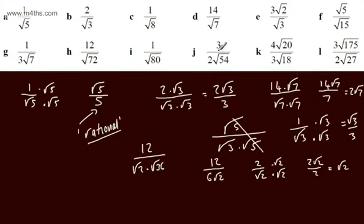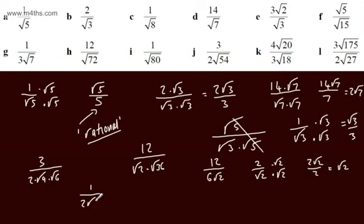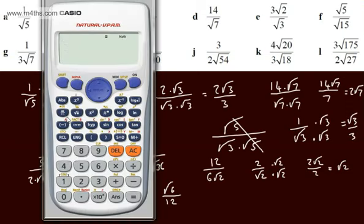For 3 over 2 root 54: if you spot that 54 is 9 times 6, you get root 9 times root 6, and root 9 is 3. The 3s cancel, leaving 1 over 2 root 6. Multiplying top and bottom by root 6: top gives root 6, bottom gives 2 times root 6 times root 6, which is 2 times 6 equals 12. So the answer is root 6 over 12. Checking on a calculator confirms this.